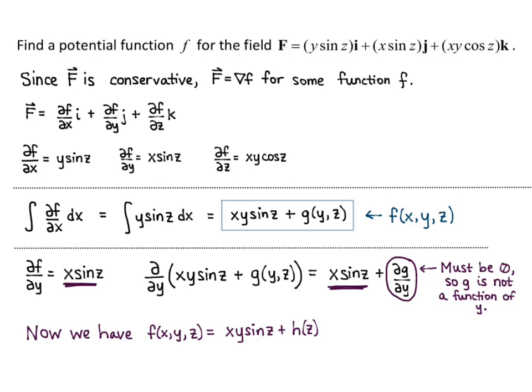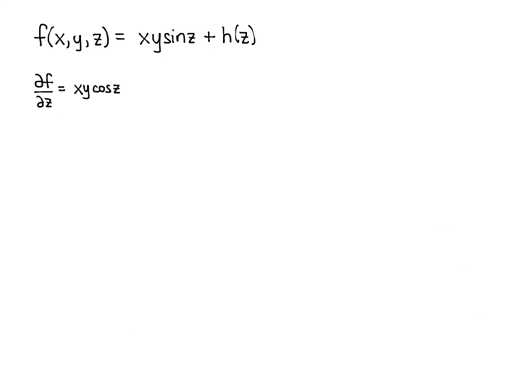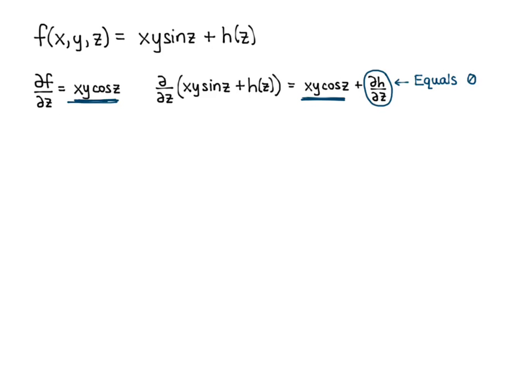Now we'll use the k component. We have ∂f/∂z equals xy cosine of z, as determined initially. Taking the partial derivative with respect to z of xy sine of z plus h(z) gives xy cosine of z plus ∂h/∂z. Notice xy cosine of z is exactly what we want ∂f/∂z to equal, so ∂h/∂z must equal zero, which means h is just a constant function.